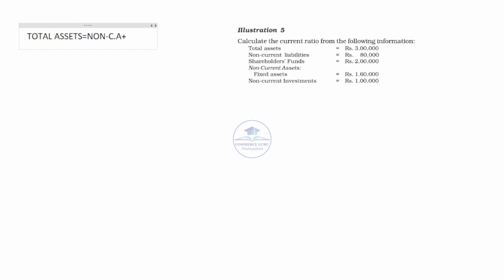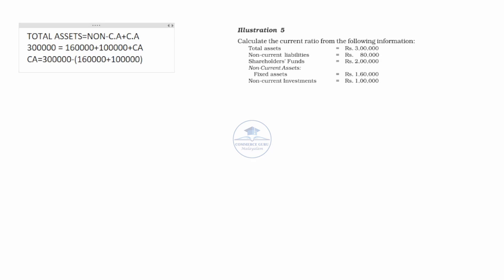Current assets equal total assets minus non-current assets. Total assets are 3,00,000 rupees. Non-current assets include fixed assets of 1,60,000 rupees and non-current investments of 1,00,000 rupees, totalling 2,60,000 rupees. Therefore, current assets equal 3,00,000 minus 2,60,000, which is 40,000 rupees.